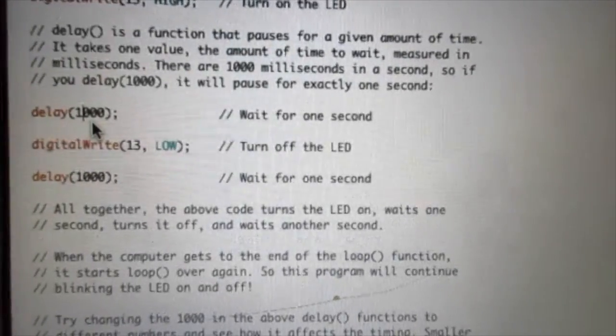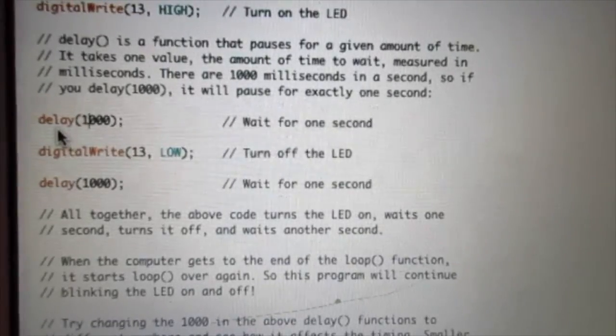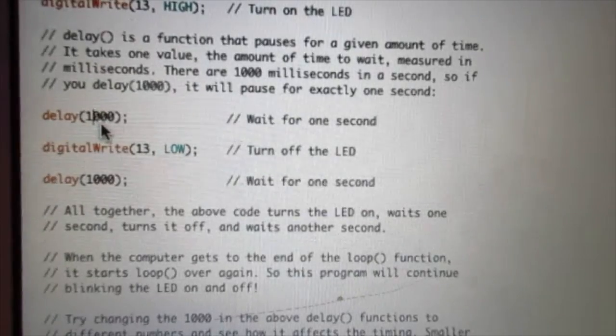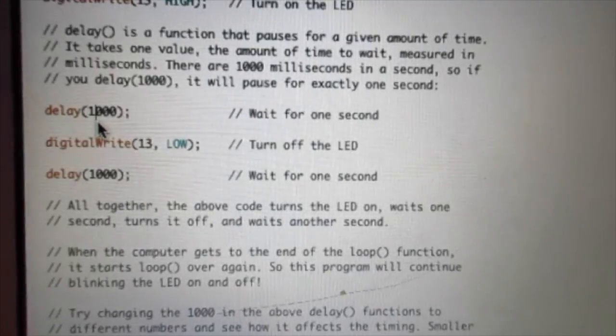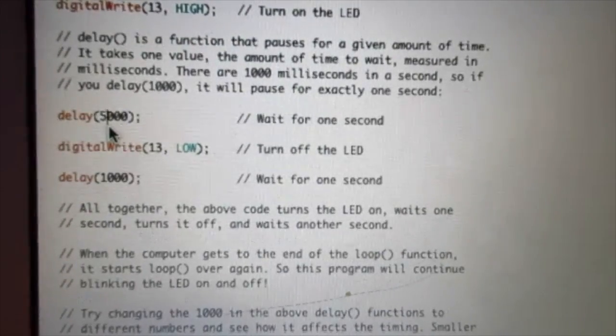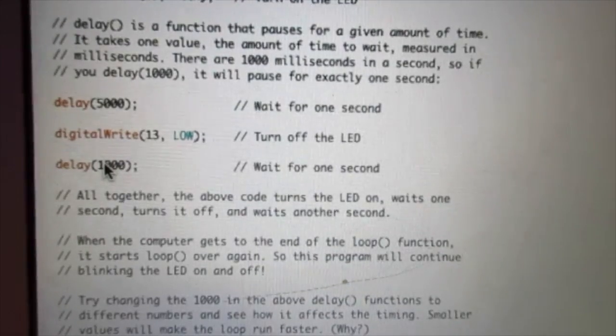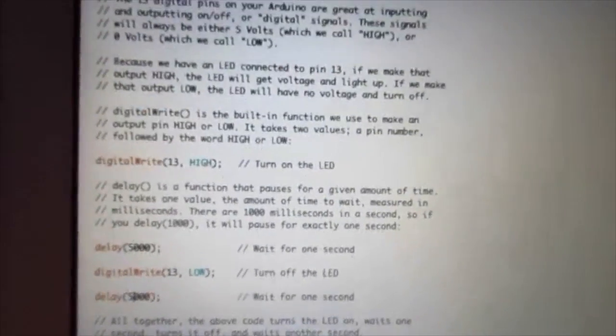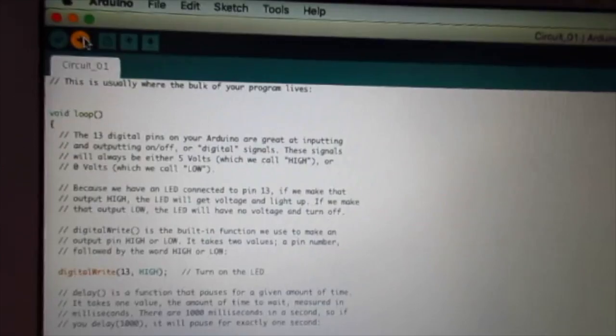To change the frequency of the blinking to make it blink faster or slower, you go to the delay function in your code. The number in the parentheses adjusts how fast or how slow the blinking will be. The higher the number, the slower the blinking will be because it will increase the delay. Now we're going to try to make the delay larger so the blinking is slower. There are two spots in the code where there's delay, so you're going to want to change both sections. Next, you're going to verify to recompile your code since you've changed it and re-upload it to the board to make it blink slower.